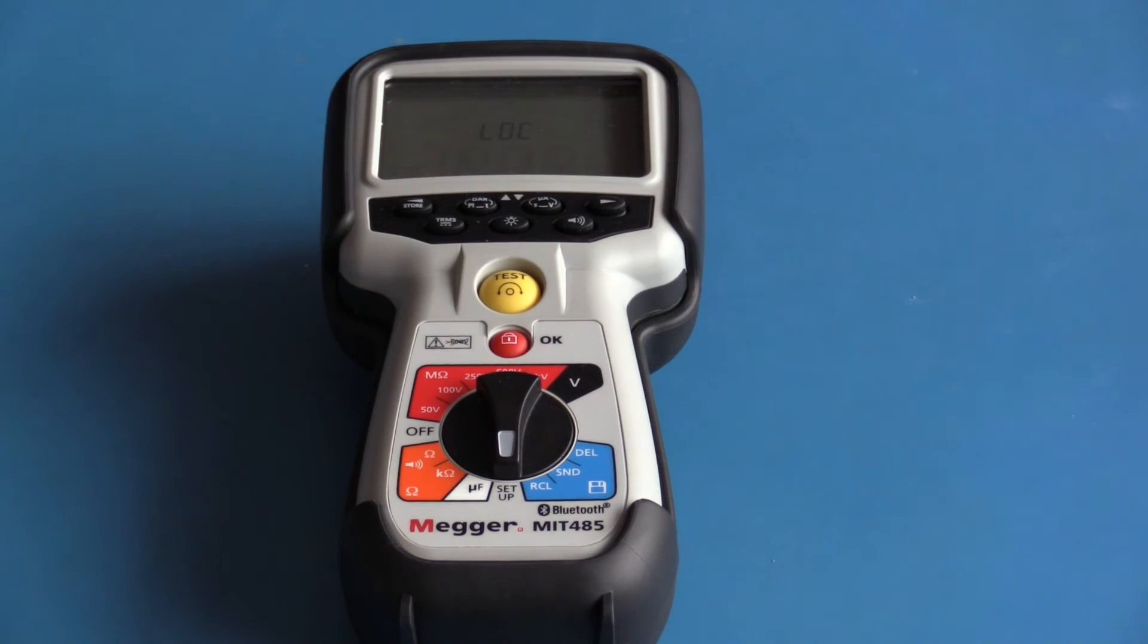This is the test enable lock. With the lock setting on, the lock button is active when making measurements. If it is set to off, the lock button will not function.